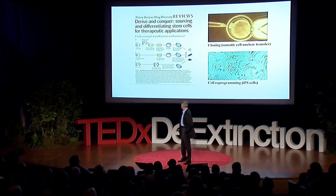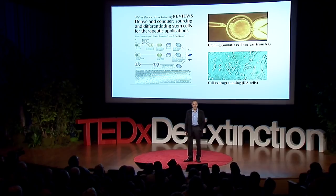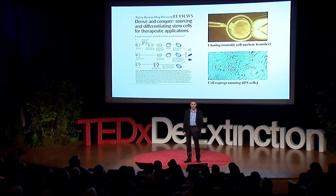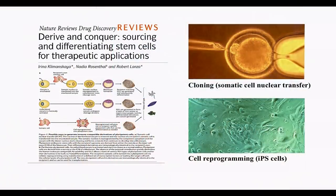I'd like to speak to you about the use of cloning and stem cells to resurrect life. There are two ways to make copies of cells and organisms. The first and most controversial is cloning, also known as somatic cell nuclear transfer.